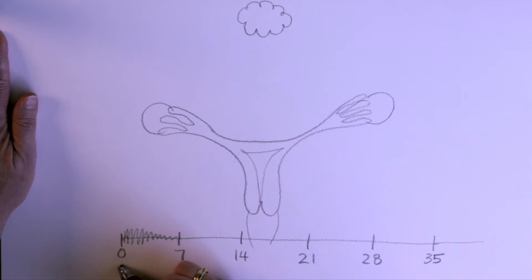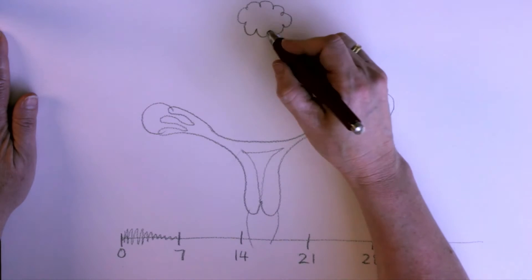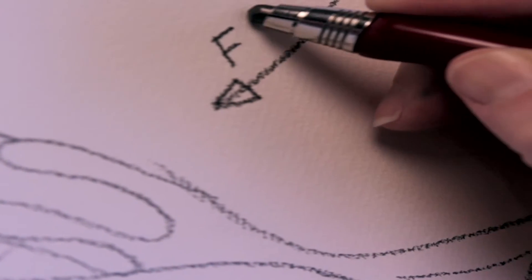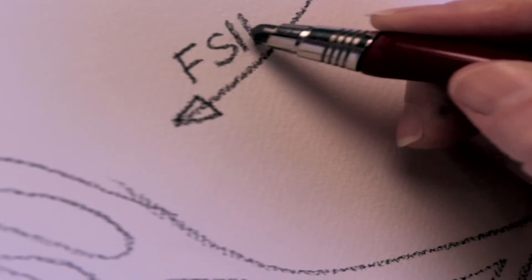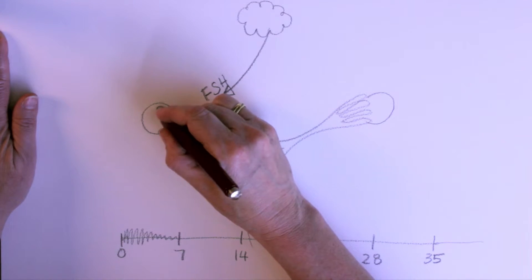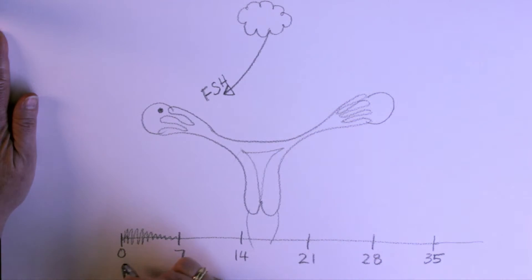When you start to bleed, your brain sends off this hormone called follicle-stimulating hormone, and that goes to your ovary, and a little egg starts to develop. So, in the follicle, the follicle-stimulating hormone gets this follicle growing, and it gets bigger and bigger as time goes on.